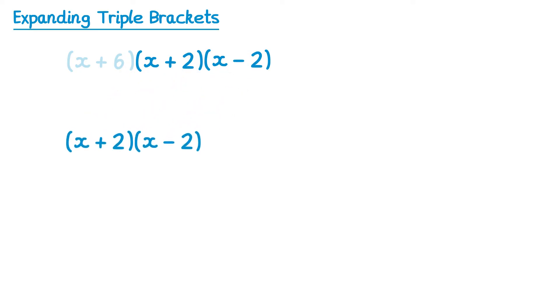So we'll multiply these two brackets together in the usual way, so we'll do FOIL. x times x, x squared. x times negative 2, negative 2x. 2 times x, 2x. And 2 times negative 2, negative 4.